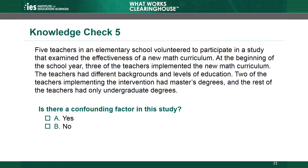Knowledge Check 5. Five teachers in an elementary school volunteered to participate in a study examining the effectiveness of a new math curriculum. At the beginning of the school year, three of the teachers implemented the new math curriculum. Two of the three teachers implementing the intervention had master's degrees, and the rest had only undergraduate degrees. Is there a confounding factor? The correct answer is B, no — there is no confounding factor. The WWC does not consider volunteering to be a confounding factor. There are no factors that align completely with either condition; although all teachers in the comparison group had undergraduate degrees only, this was also true for one teacher in the intervention group.